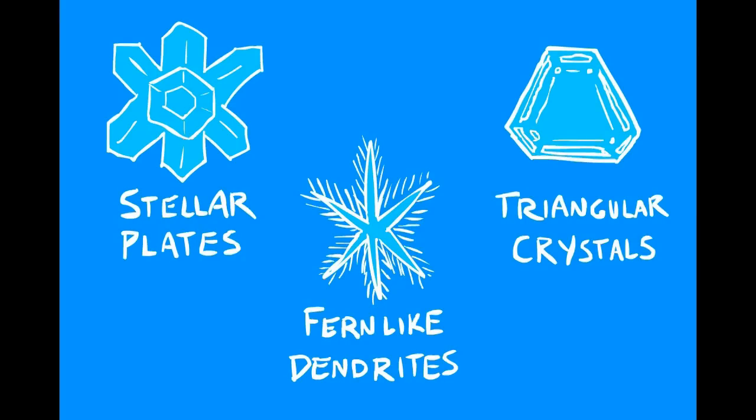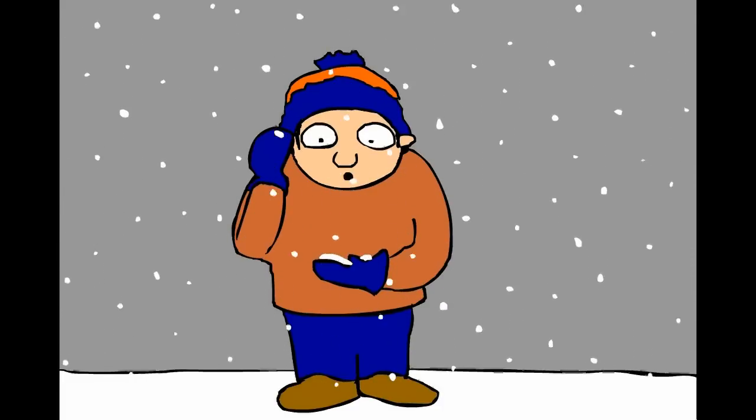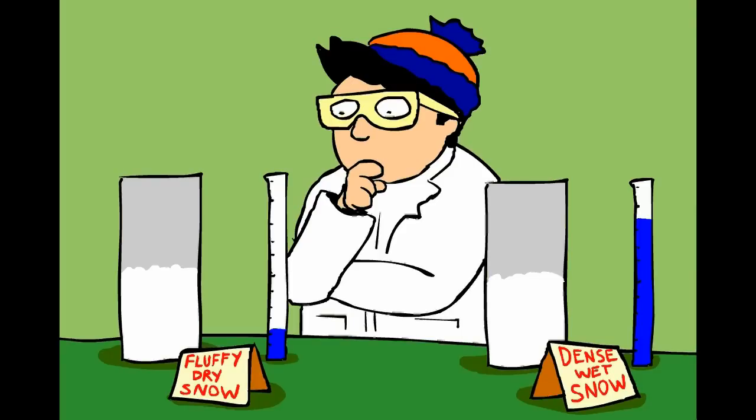Differences in temperature and snow crystal types can result in many different kinds of snow. Heavy wet snow, light fluffy snow, etc. And these can drastically change the amount of water that is contained in accumulation.